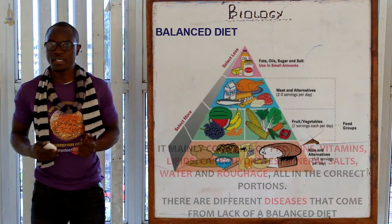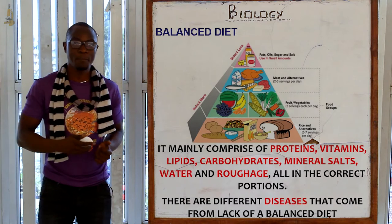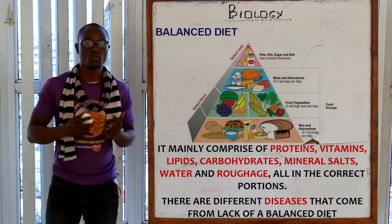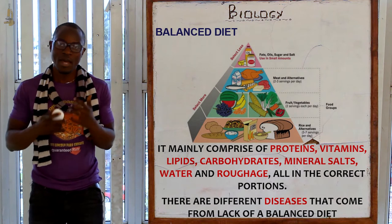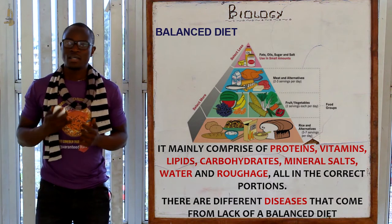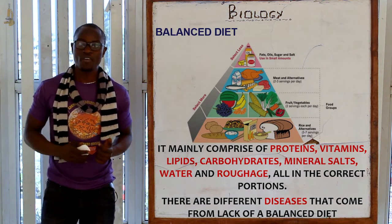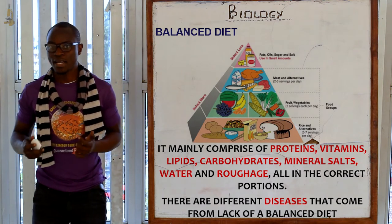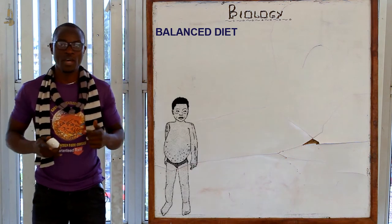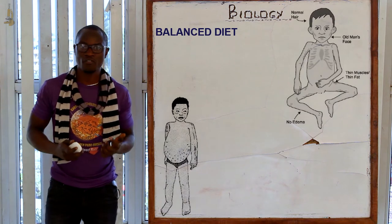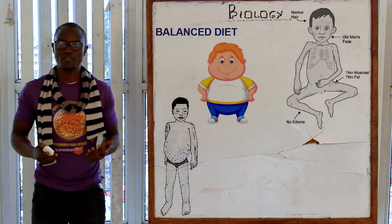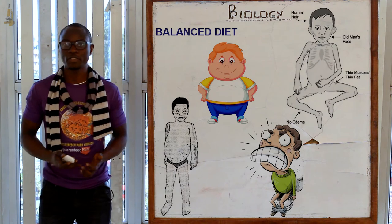A balanced diet consists of proteins, vitamins, lipids, carbohydrates, minerals, water, and roughages. Not to forget, there are diseases that may come from lack of a balanced diet, such as kwashiorkor, marasmus, obesity, and constipation.